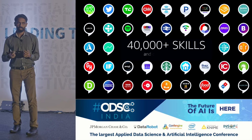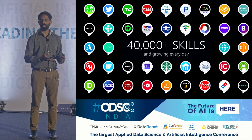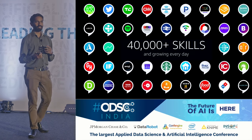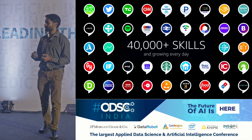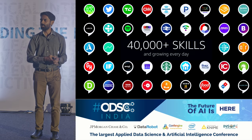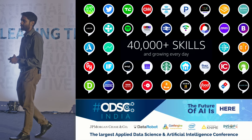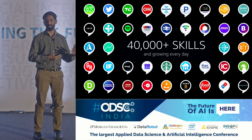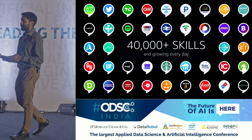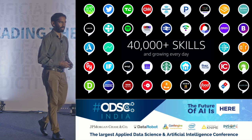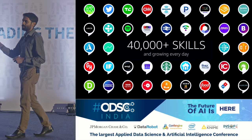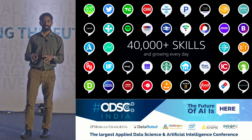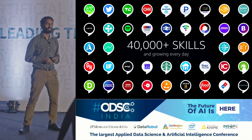Similar to how when you buy a phone it can do a few things out of the box — make calls, send SMS, take photos — and the first thing you do is download apps, similarly you can enable skills. A skill on Alexa is like an app on your phone — it enhances Alexa's capabilities. You can order an Uber cab, play a song via Saavn, get a restaurant recommendation via Zomato, and so on. The skill ecosystem is completely open, so third-party developers can build and publish skills. I'm also doing a workshop on how to build skills this Sunday as part of ODSE.